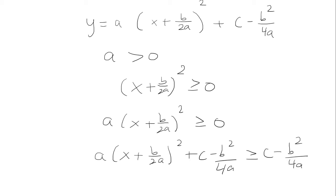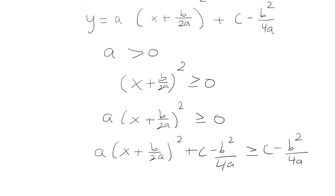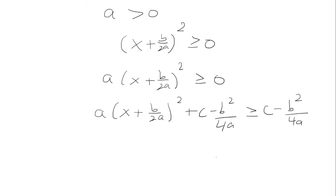Okay, so what we showed here is that our equation is always greater than or equal to a value. So let's say, for example, c minus b squared over 4a, let's say it's somewhere up here. My parabola is always going to be bigger than or equal to this value. So let's say it looks something like that.